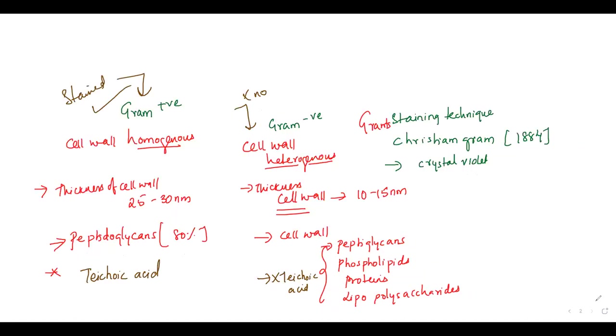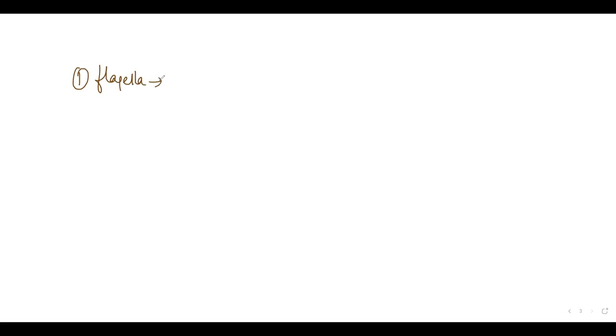Based on the presence of the flagella, you can classify bacteria into different types. If a bacteria is going to have only one flagellum — a single flagellum — then we are going to call this bacteria as monotrichous bacteria.